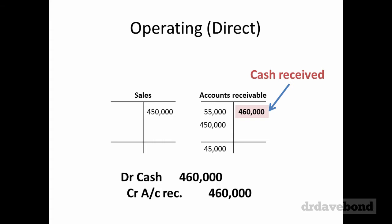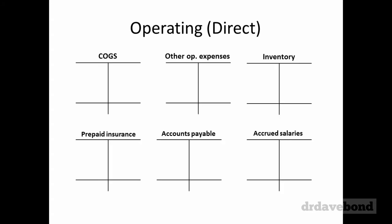That would be debit cash $460,000, credit accounts receivable $460,000. Moving on to the expense side of the operating cash flows — I've put in T-accounts for all the accounts we need: cost of goods sold, other operating expenses, inventory, prepaid insurance, accounts payable, and accrued salaries. The first thing I do is put in the opening and closing balances for each of these balance sheet accounts.